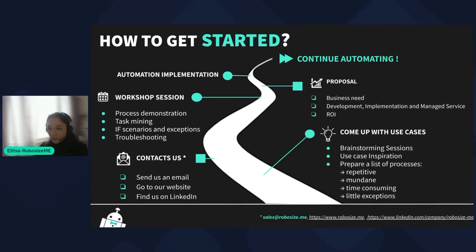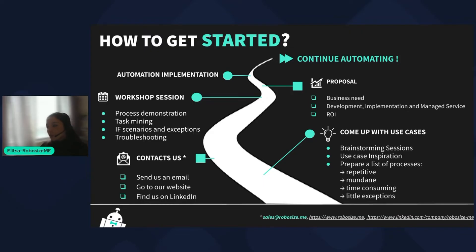If you wish to get started with automation in your hotel, there are a few steps that we follow here at RoboSizeMe. The first step would be to come up with a list of processes that you would like to see automated in your environment. As Lukash already mentioned, the perfect candidate for automation would be a repetitive, mundane, but also critical to the operations of the hotel process.